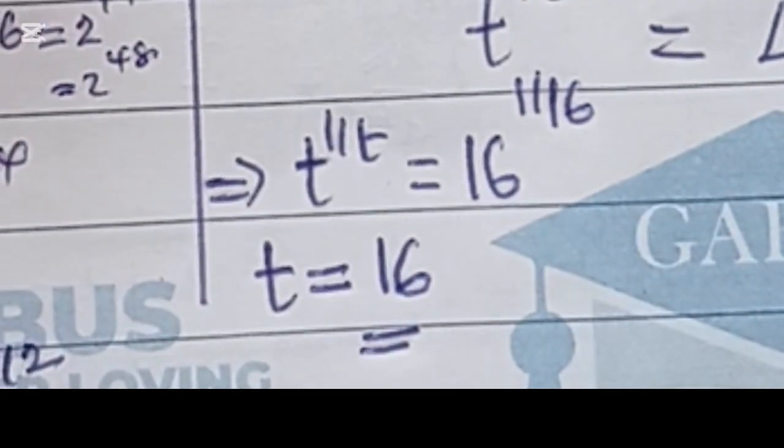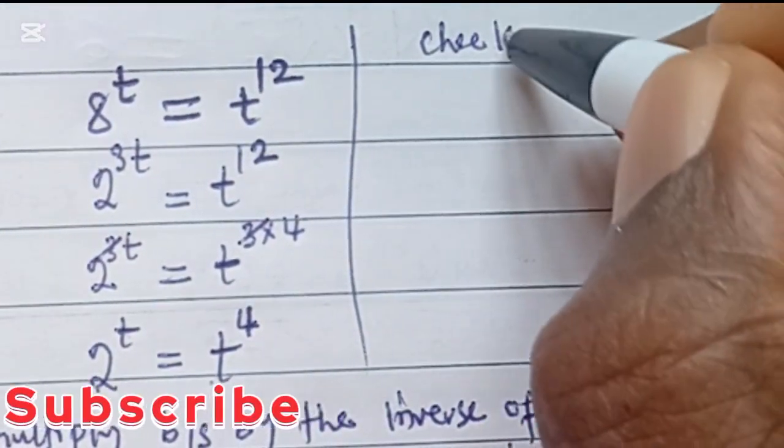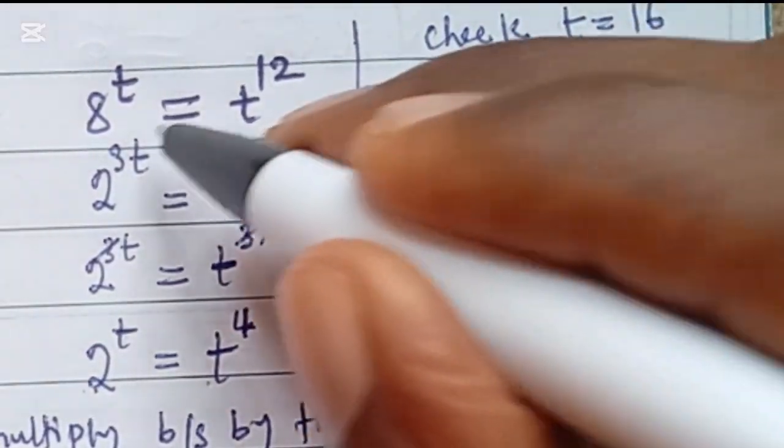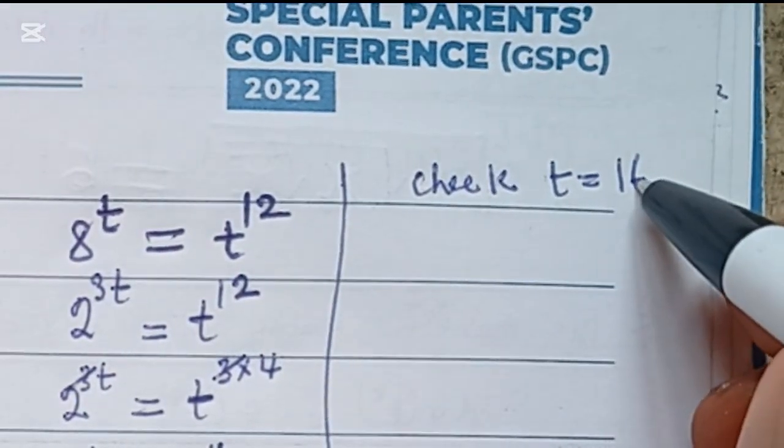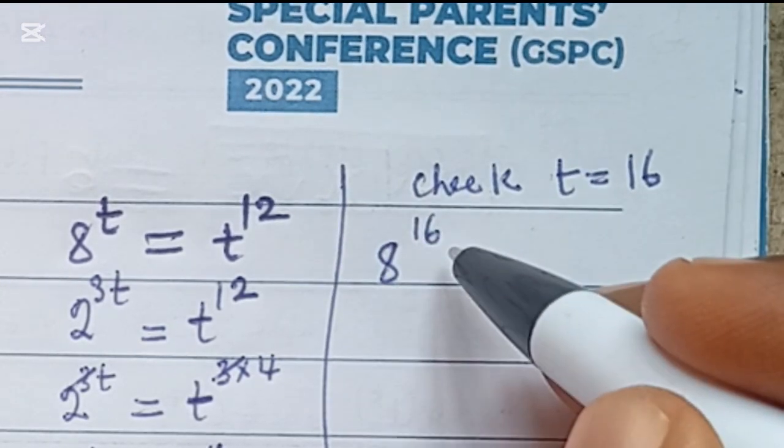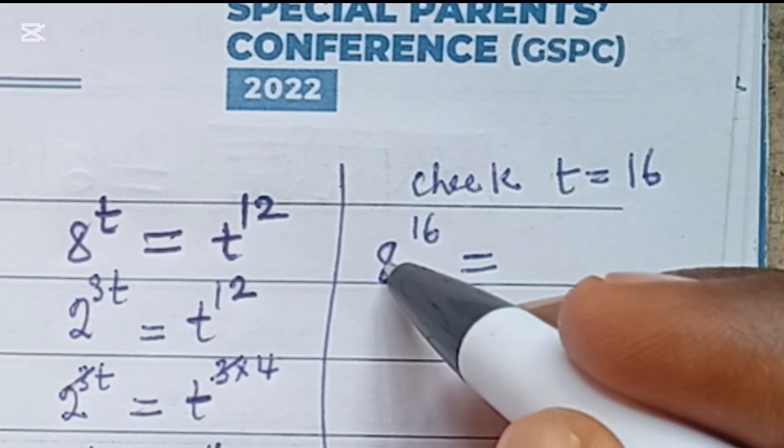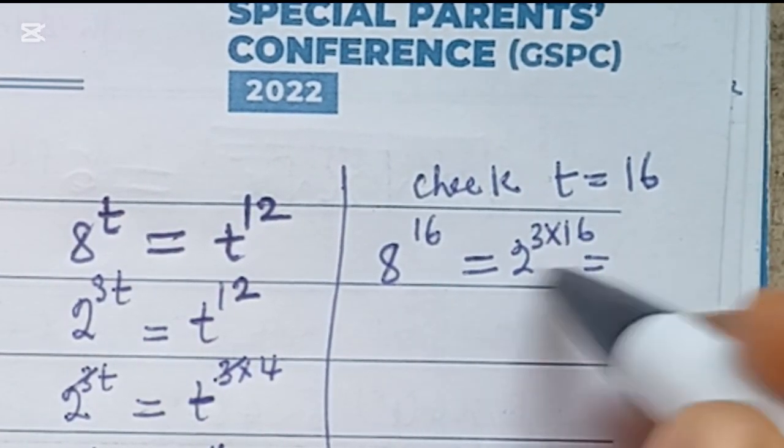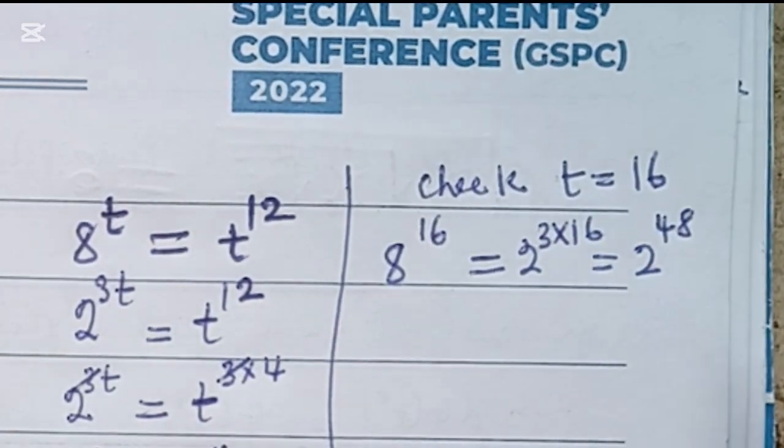When you substitute 16 into the original equation, let's do a quick check by the side here and confirm if our answer is correct. Let's check if t is equal to 16. To do that, all we can simply do is substitute 16 in place of t. So this becomes 8 to the power of 16 on the left-hand side. Let's evaluate the left-hand side. Let's break it down to 8 is 2 to the power of 3 times 16, and that gives us 2 to the power of, 3 times 16 gives us 48.